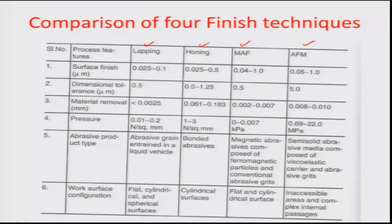Looking at the surface finish range, in lapping the average surface roughness varies between 0.025 to 0.1 micron — that is about 100 nanometers finish. In honing it varies between 0.025 and 0.5 micron or 500 nanometers. Magnetic abrasive finishing can achieve up to about 40 nanometers finish, delving into the sub-micron range. Abrasive flow machining can go from 0.05 to about 1.0 microns, so from about 1000 nanometers all the way down to about 50 nanometers finish.